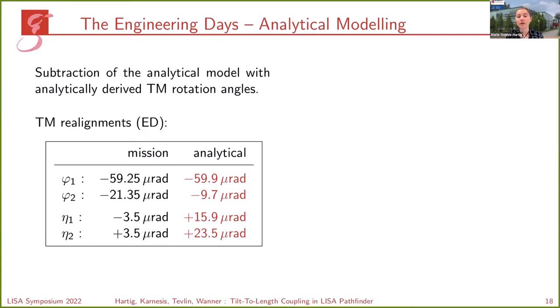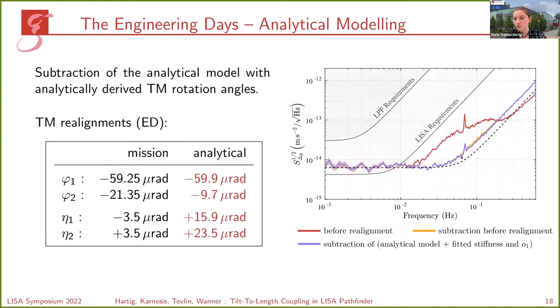When we insert these angles into the model and subtract them, we again find the purple curve overlapping with the result obtained when subtracting the fit at this time of the mission. However, the additional noise at higher frequencies would not be present if you really perform the realignment, since it comes only from the subtraction. So at this time of the mission we would have had full suppression of the tilt-to-length noise.